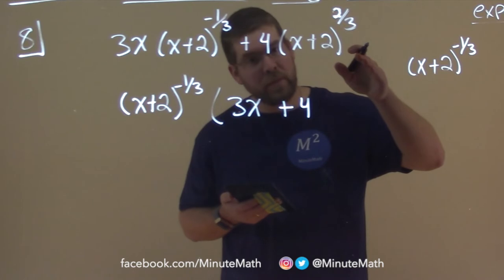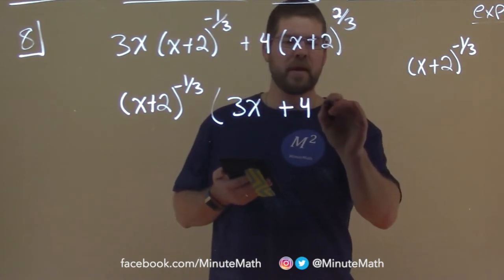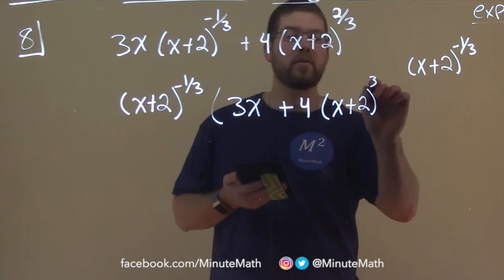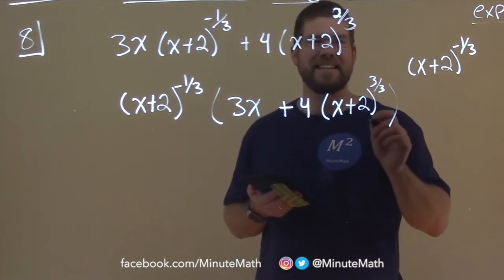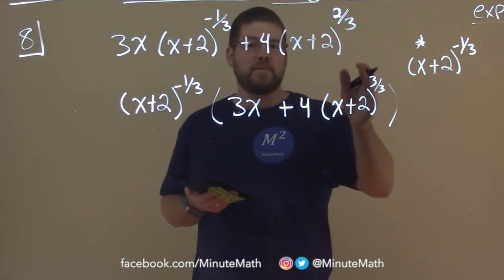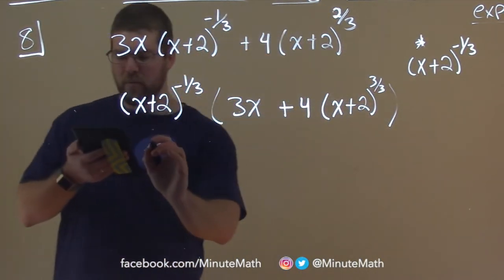2/3 plus 1/3 is a positive 1. So I'll write it as this, so you can see it, (x+2) to the 3/3 power. And so that really just becomes the 1 power. So let's go write that out.